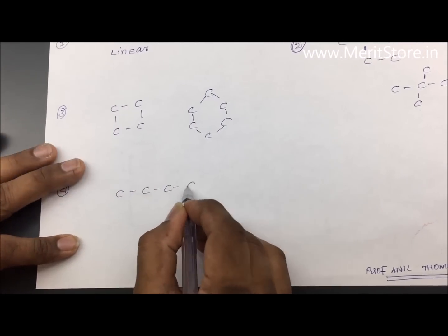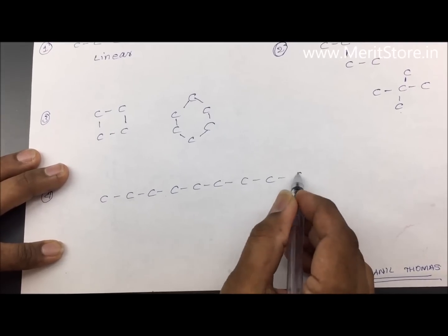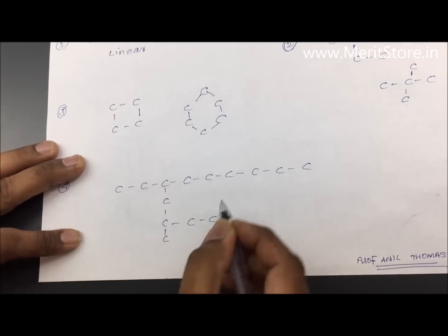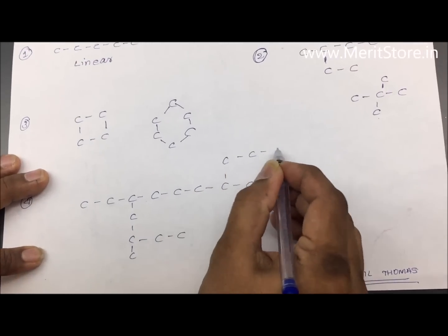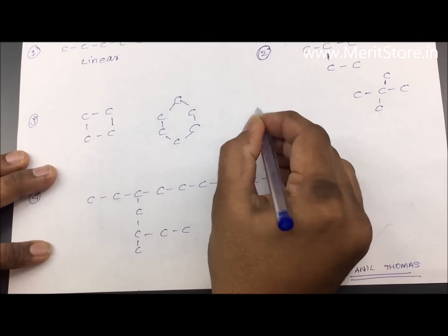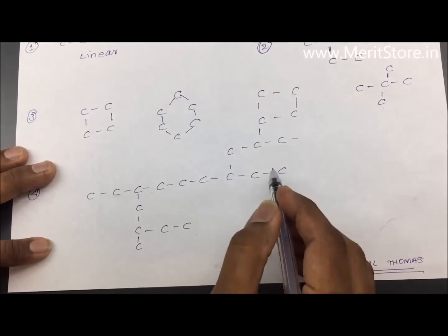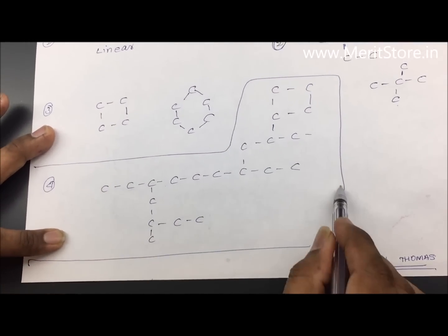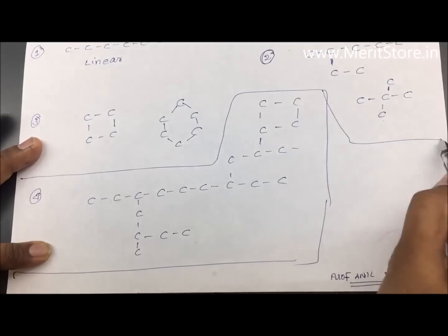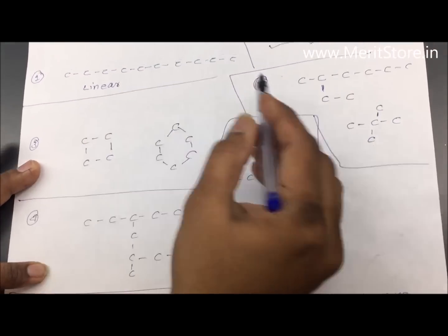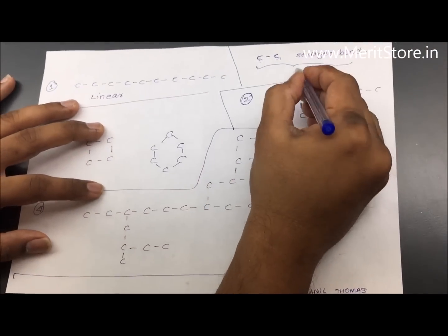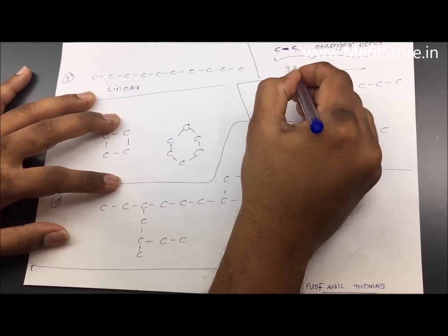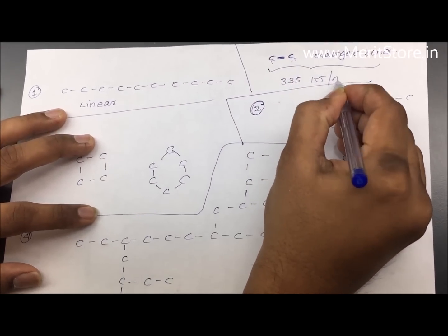The fourth type combines all of the above together — you can have a chain with a branch, and that branch can contain a closed ring structure, making it as complex as possible with no end. This complexity is possible because the carbon-carbon bond energy required to break it is close to 335 kilojoules per mole, making it remarkably strong.